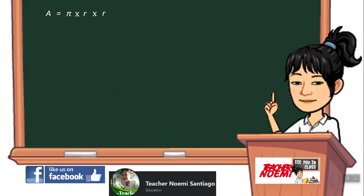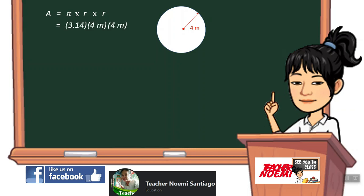Next, let us find the area of the circle using the formula A equals pi times R squared. If the radius is 4 meters, we have 3.14 times 4 meters times 4 meters, which equals 3.14 times 16 square meters. The area equals 50.24 square meters.